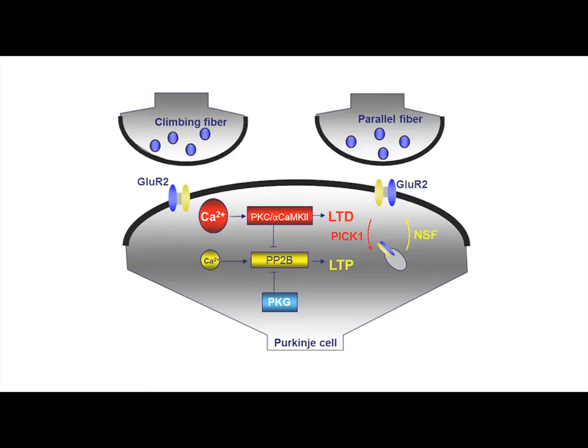Long-term potentiation at the parallel fiber to Purkinje cell synapse depends on the phosphatase PP2B, which in effect allows the glutamate receptor subunits to be inserted at the post-synaptic site. So we created a mouse model in which PP2B is blocked specifically inside the Purkinje cell, and we named this mouse L7-PP2B.